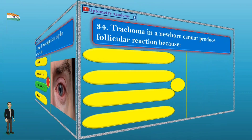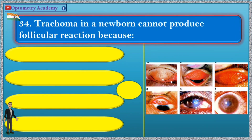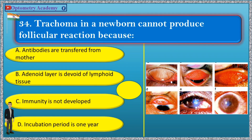Question 34. Trachoma in a newborn cannot produce follicular reaction because: A. Antibodies are transferred from mother, B. Adenoid layer is devoid of lymphoid tissue, C. Immunity is not developed, D. Incubation period is one year.